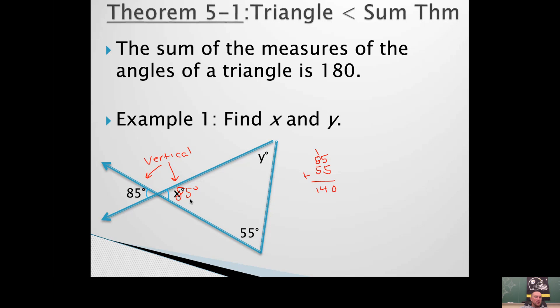We have an 85-degree angle and a 55-degree angle inside the triangle. That adds up to 140 degrees, which means we should know what's left over. This angle right here will be 40 degrees.